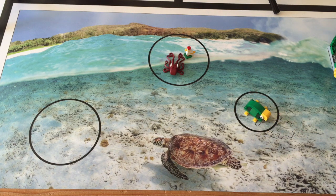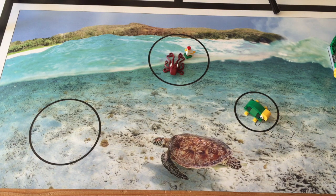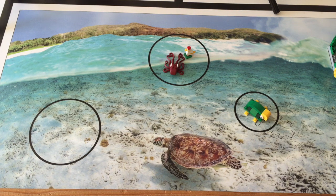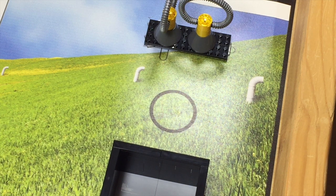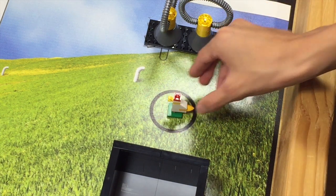The animals include the turtle, the octopus, and the chicken. The octopus and chicken come from base. You can earn 55 points if you put the chicken in the small circle in the landfill area.